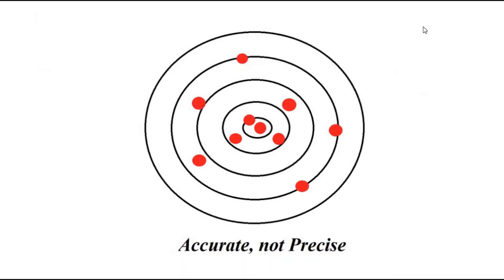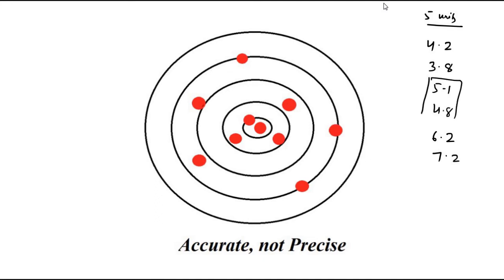In this case, the true value is again 5 units, but the output readings are spread out: 4.2, 3.8, 5.1, 4.8, 6.2, 7.2. Every now and then we get close to the true value — readings like 5.1 and 4.8 are close — but the instrument is not able to get the correct reading on a consistent basis. So this is somewhat accurate but not precise.